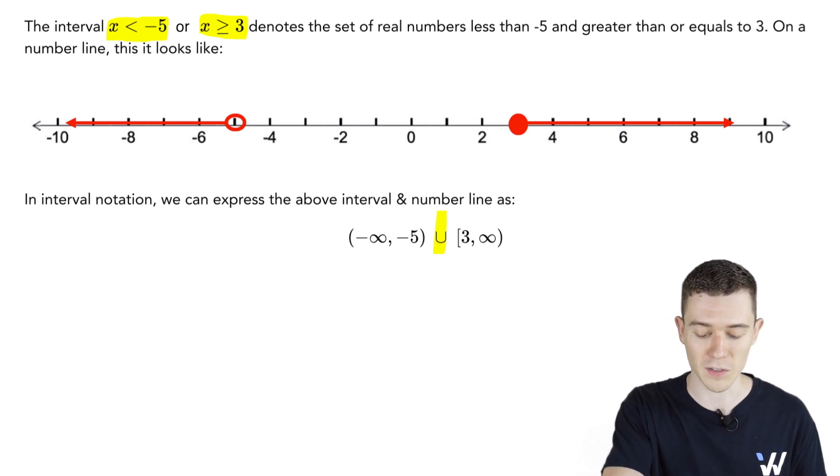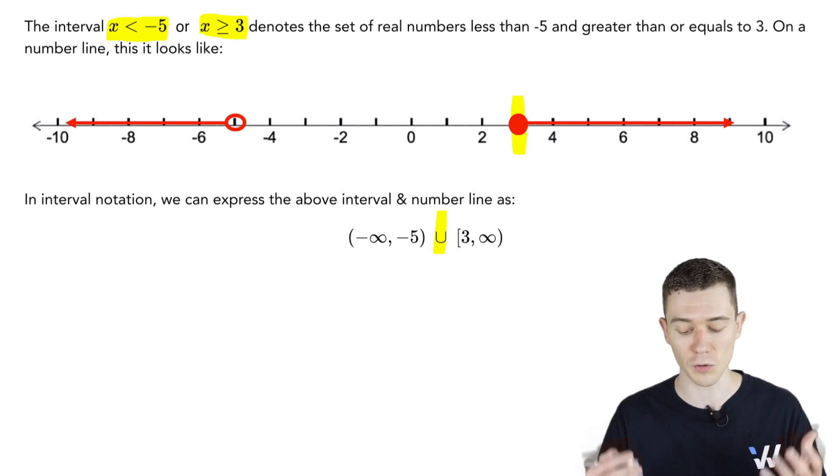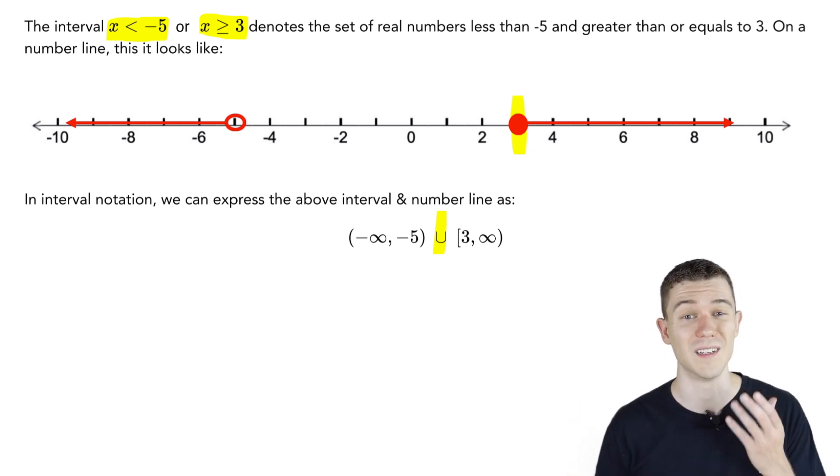Bracket 3, that's because our 3 was included with that closed circle. Comma infinity goes forever to the right. That's how we use unions, and that's your introduction to interval notation.